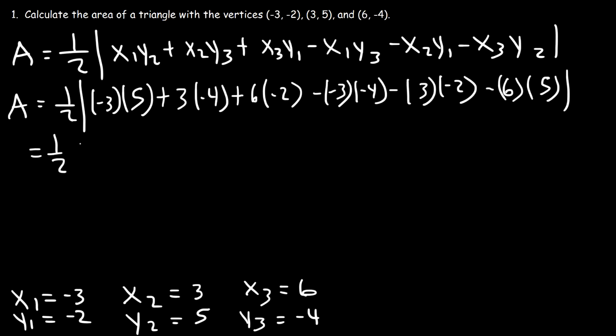So negative 3 times 5 is negative 15. 3 times negative 4 is negative 12. 6 times negative 2 is also negative 12. Negative 3 times negative 4 is positive 12, but we have a negative sign in front of it so that's negative 12. 3 times negative 2 is positive 6. And 6 times 5, which is negative 30.